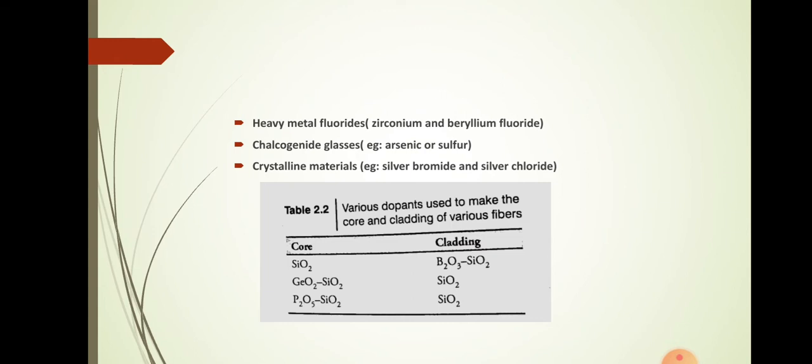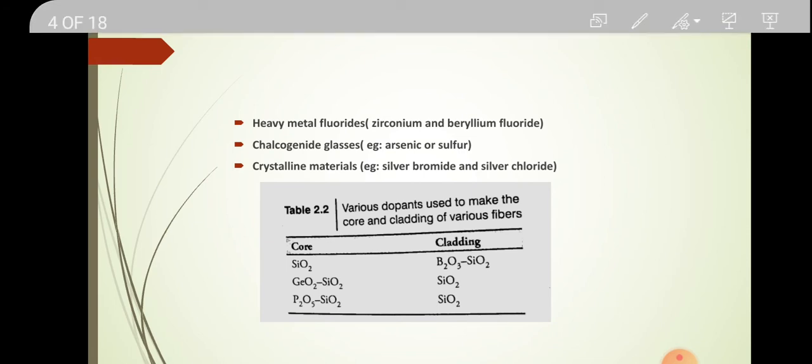A table shows the core and cladding materials. If using pure SiO2 as the core, the cladding should have a lesser refractive index, so dopant B2O3 is added to pure silica to reduce its refractive index. If using GeO2-SiO2 as the core — where germanium dopant is added to pure silica to increase its refractive index — then pure silica can be used as cladding. Similarly, using P2O5-SiO2 as the core, where phosphorus is doped into pure silica to increase refractive index, pure silica is again used as cladding.